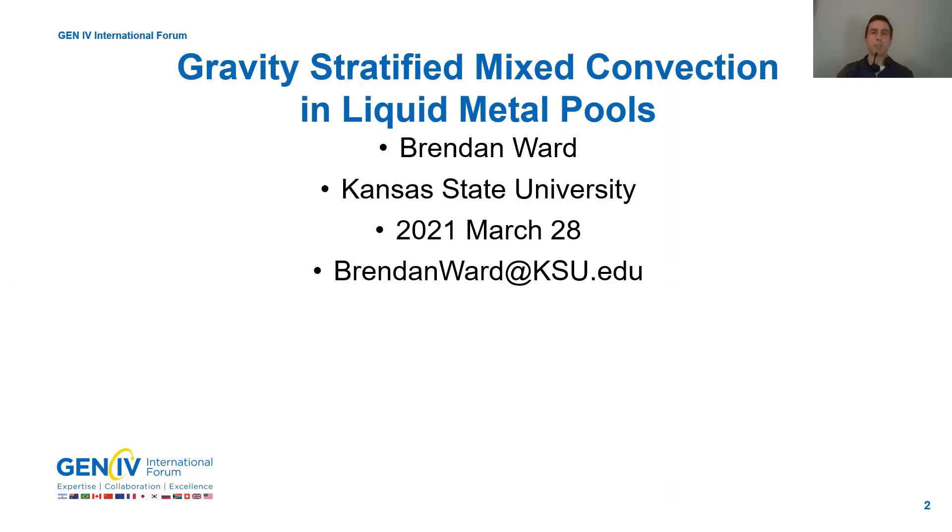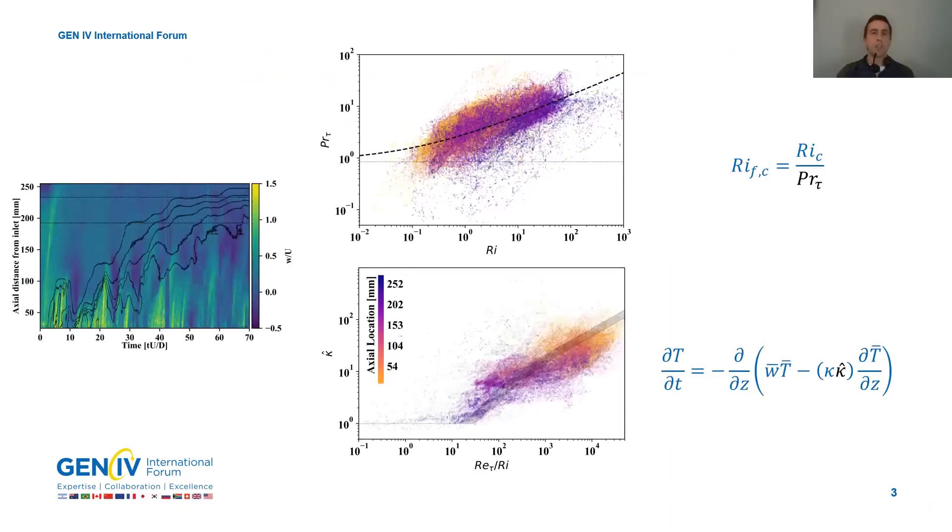These produce the raw signal that you see on the left. The velocity is the color contour and isotherms are in black, seen in space and in time as the colder gallium is injected into the bottom, representing something like a protected loss of flow where core power shuts down, cooling the fluid entering into the upper plenum.